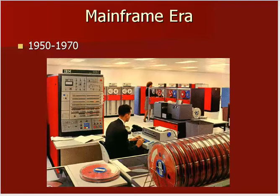The mainframe era lasted for about 20 years. IBM dominated it. By the 1960s, these mainframes were using transistors, which were a big improvement because they used significantly less power. They also used 8-track tapes to store and transmit data — inputting a program was almost like inserting a game cartridge. The data for these mainframes was still stored on magnetic tape, and punch cards were actually still used to program the machines a lot of times.